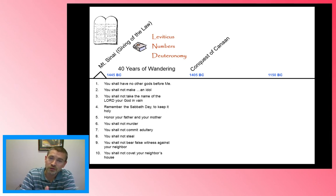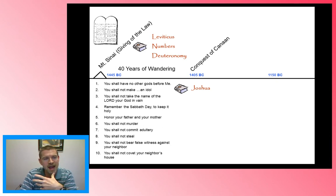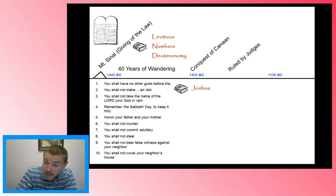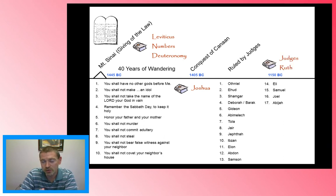Then we have the conquest of Canaan, which is recorded in the book of Joshua, the next of the historical books. Joshua records that he is the leader that takes them into the promised land, and they defeat the tribes around them. The 12 tribes are partitioned out in parts of the land of Canaan. For the next 300 years or so, they're ruled by judges — about 17 different judges found in the Old Testament book of Judges. The book of Ruth also fits into that time period.